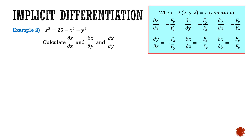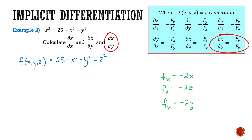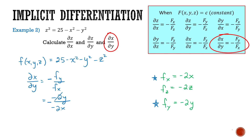Now I only have one more derivative to do: ∂x/∂y. I'll use the relationship negative f sub y over f sub x. Recalling my function f and its partial derivatives, ∂x/∂y equals negative f sub y over f sub x, which is negative (−2y) divided by (−2x). The negative 2's cancel, so ∂x/∂y = −y/x. And there I've solved for how x is changing with relation to y.